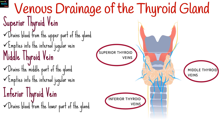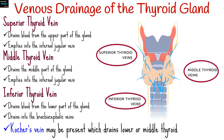The inferior thyroid vein drains blood from the lower part of the gland and typically drains into the brachiocephalic veins. Coker's vein may also be present, which drains the lower or middle thyroid.